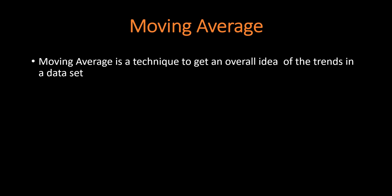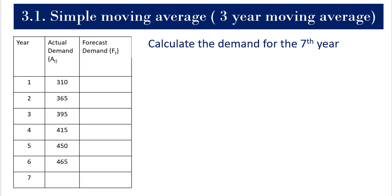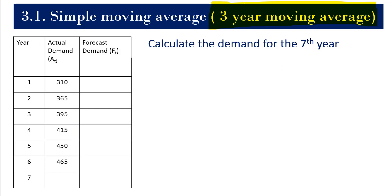I will show you how to calculate the moving average. In the problem we are given the year, the actual demand, and we are asked to forecast for the seventh year. Moving averages can be for a three-year period, a four-year, five, seven, nine, and so on. Here we are asked to do a three-year moving average. We are going to take the data in groups of three years each.